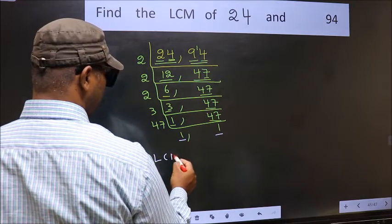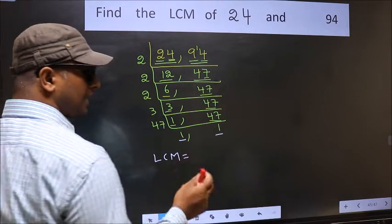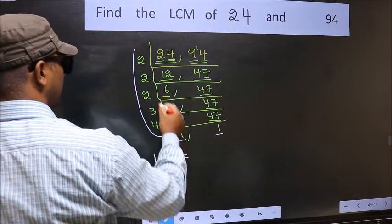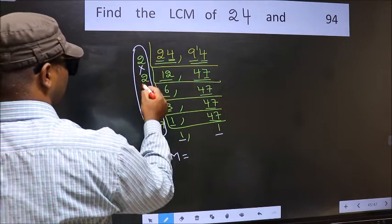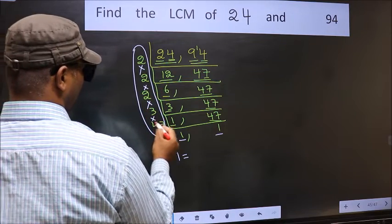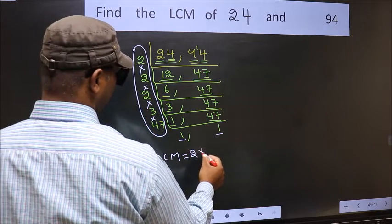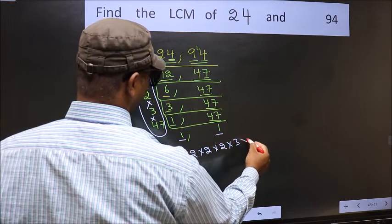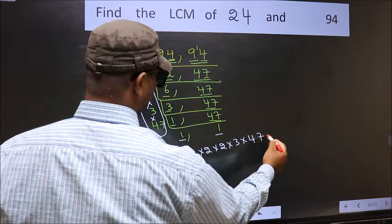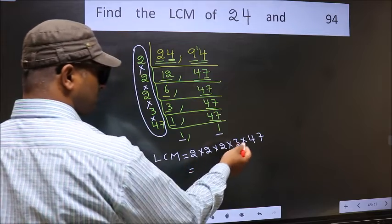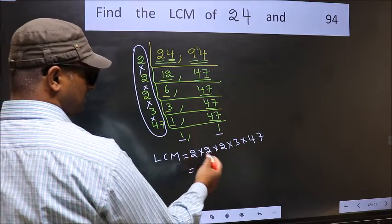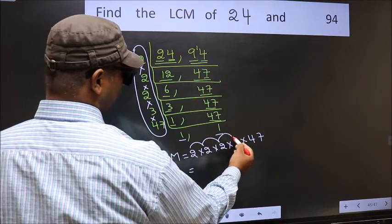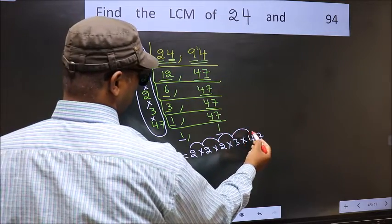So our LCM is the product of these numbers. That is 2 into 2 into 2 into 2 into 2 into 3 into 47. Let us multiply these numbers: 2 into 2 is 4, 4 into 2 is 8, 8 into 3 is 24, and 24 into 47.